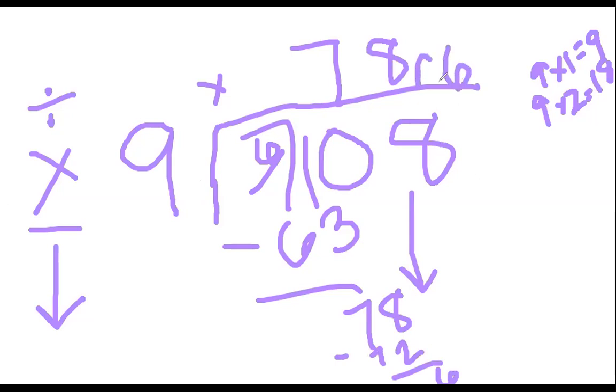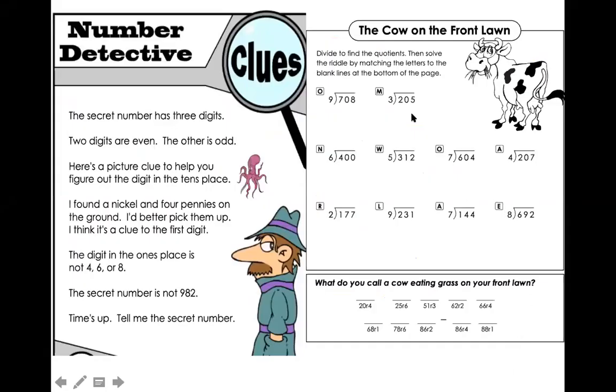When I subtract, I get six. Since there is nothing else to bring down, I'm going to write it like this: remainder six. So my answer is 78 remainder 6. When I go back to my riddle math here, I can see that that is an option down here at the bottom, so I know that I've done that correctly. And the O is going to go right there on top of that blank. If you have any questions, feel free to ask your teacher.